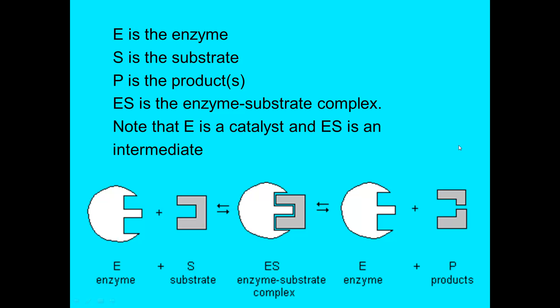This is often referred to as the lock-and-key mechanism: the enzyme fits tightly to the substrate, the enzyme-substrate complex shifts, the enzyme changes the geometry of the substrate, and the product breaks a covalent bond. So enzymes speed up the breakage or formation of a covalent bond, while the interaction between the enzyme and the substrate is a non-covalent interaction.